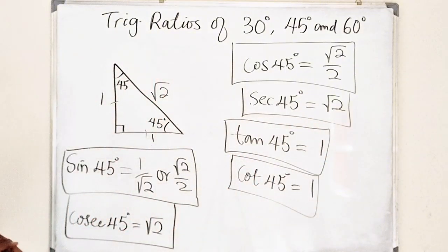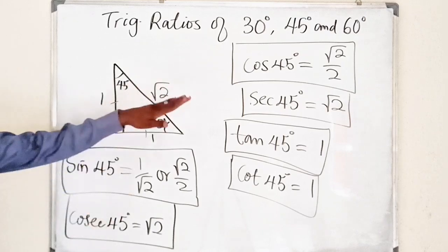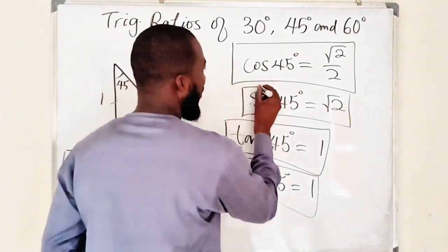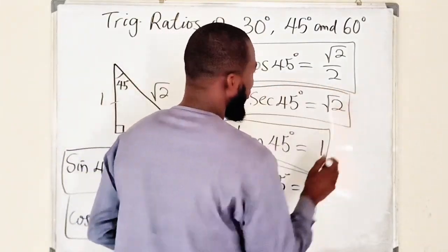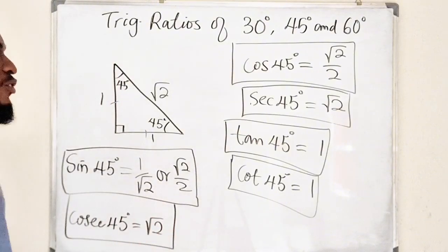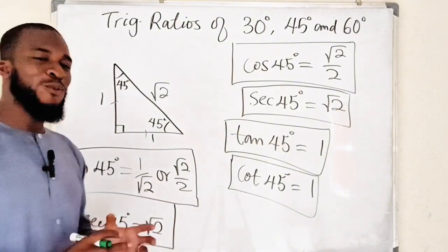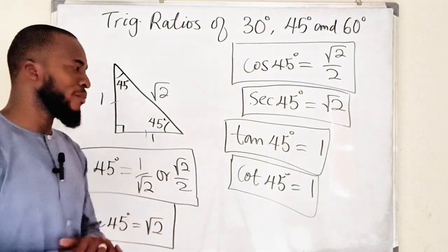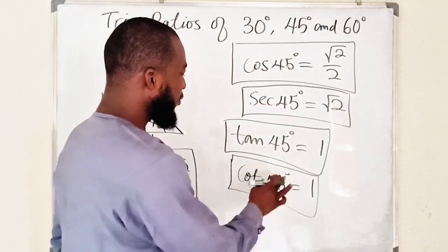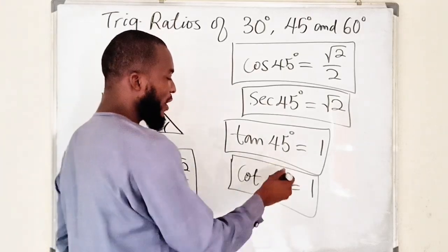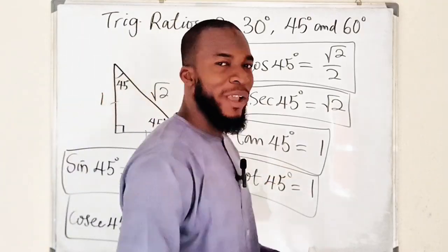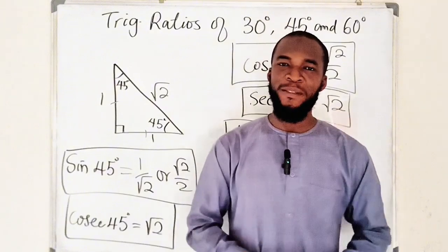So we have all six of them — one, two, three, four, five, six. This is how to find the trigonometric ratios of these special angles. When we get to the unit circle, you will see a lot of them. Thank you for watching. Do share with your learning colleagues, and don't forget to subscribe to my YouTube channel for more exciting videos. Bye!